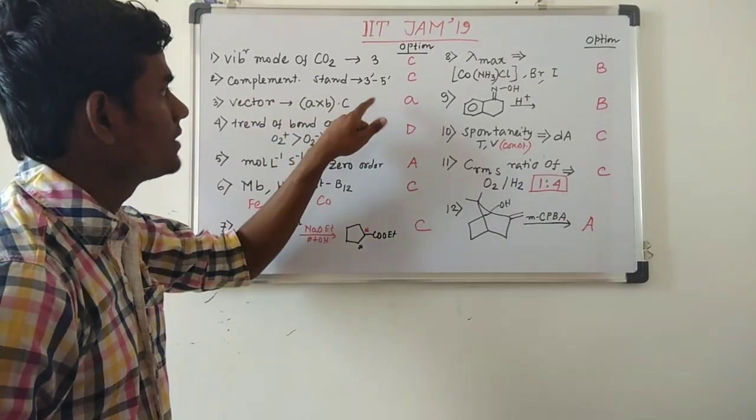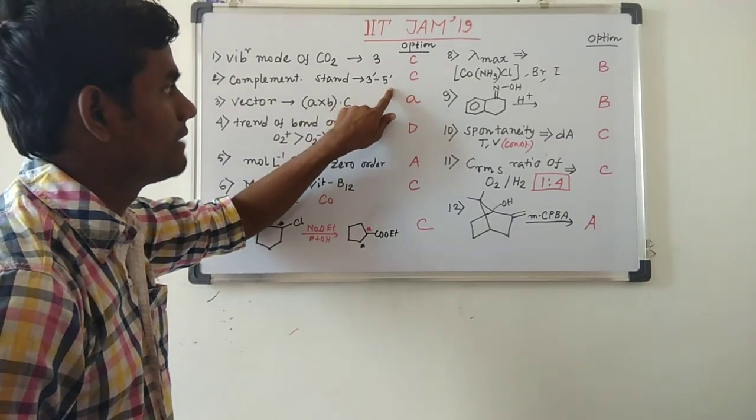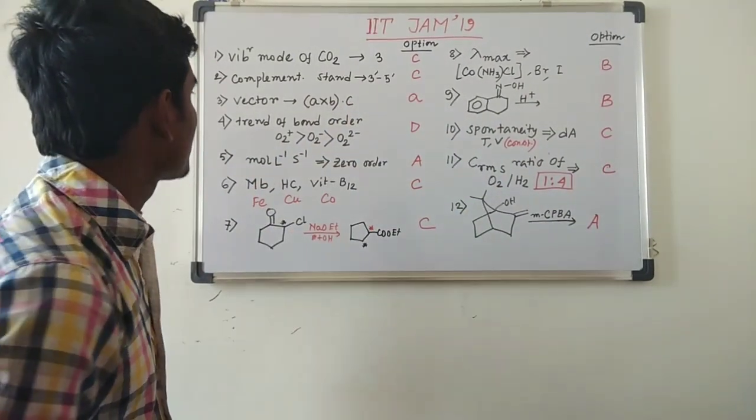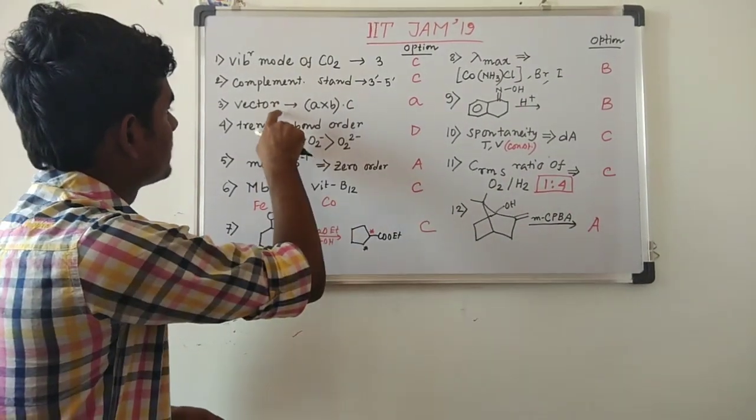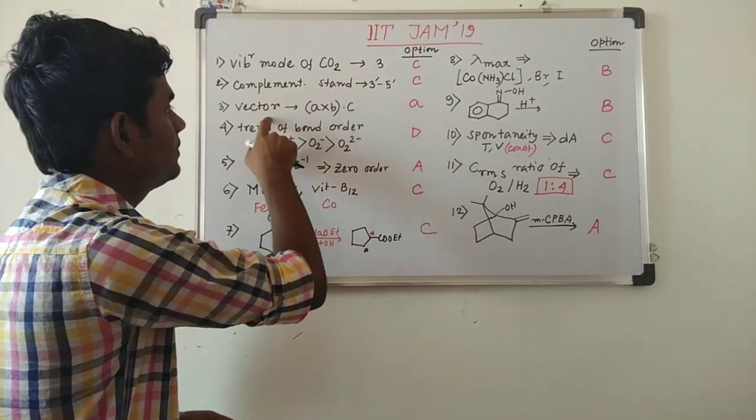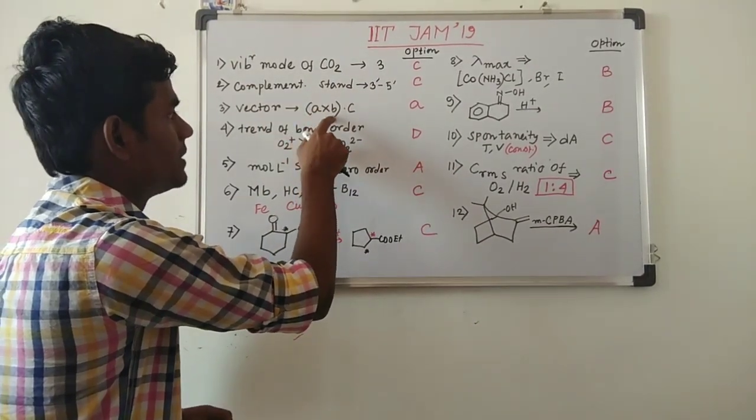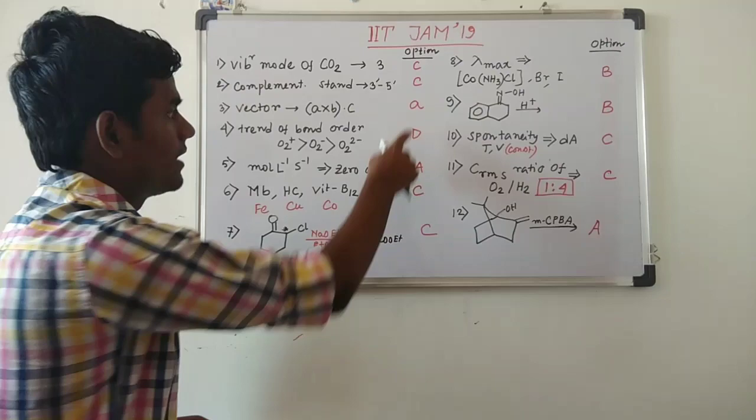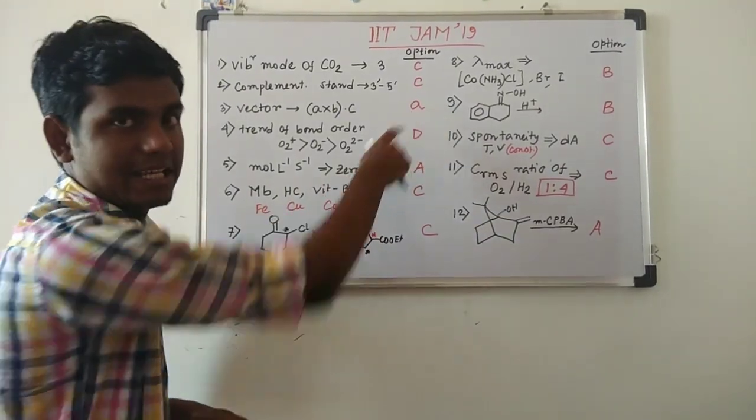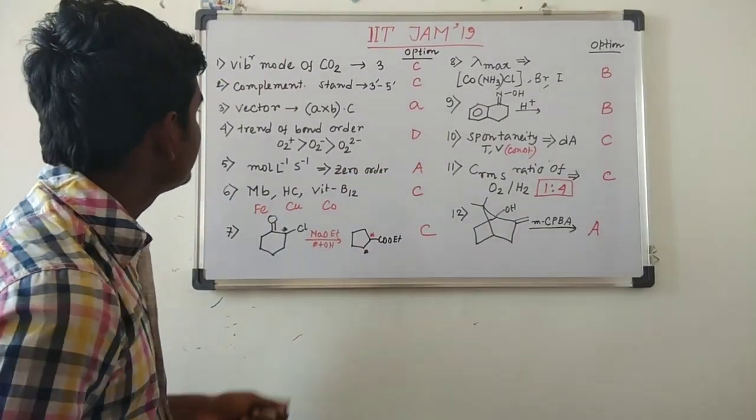Then they have asked complementary strand of the DNA sequence and the answer will be 3 prime, 5 prime, answer is C. And then they have asked a numerical question: what will be the vector so A cross B dot C, this will be the answer, and in the question it will be option A.